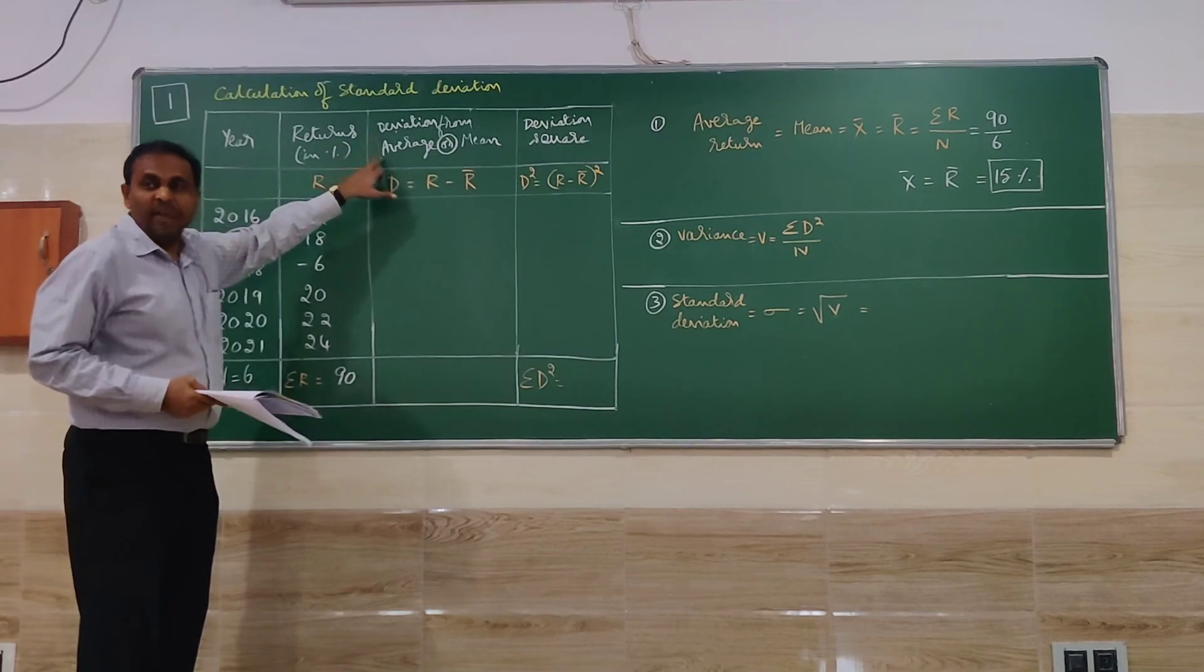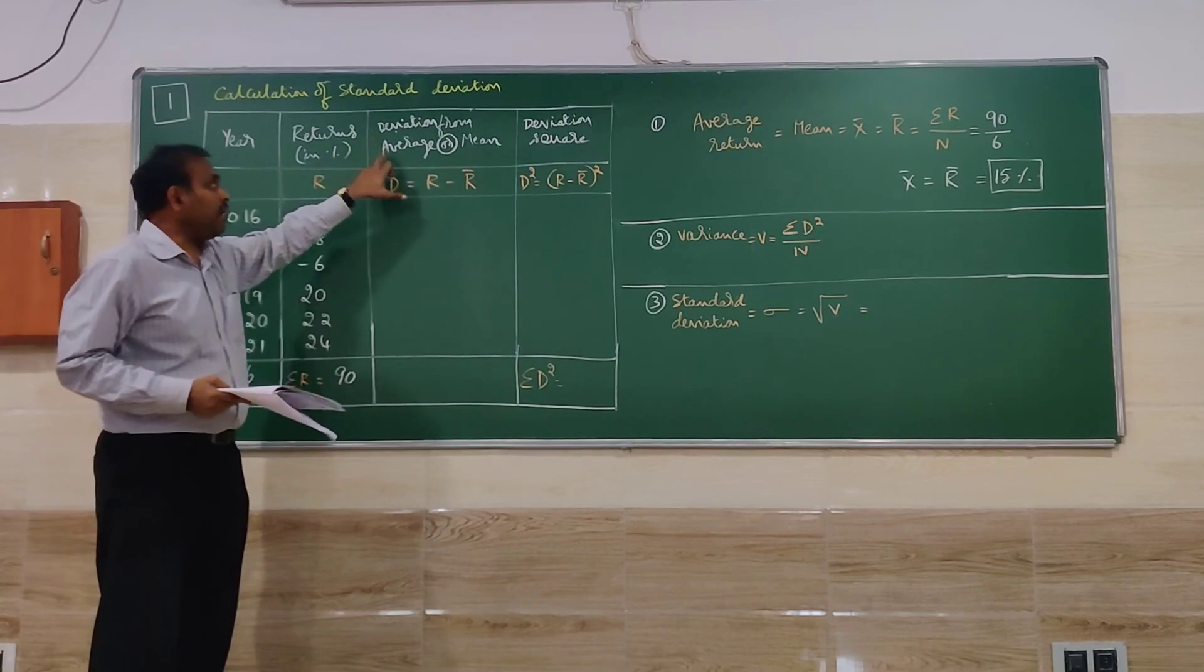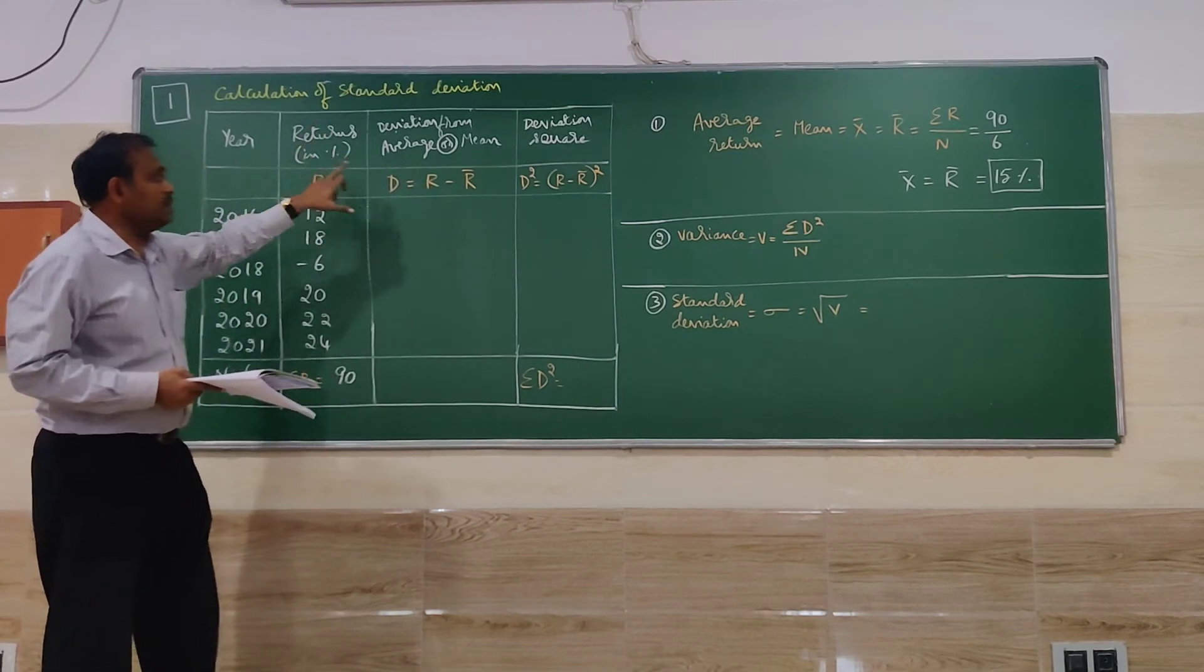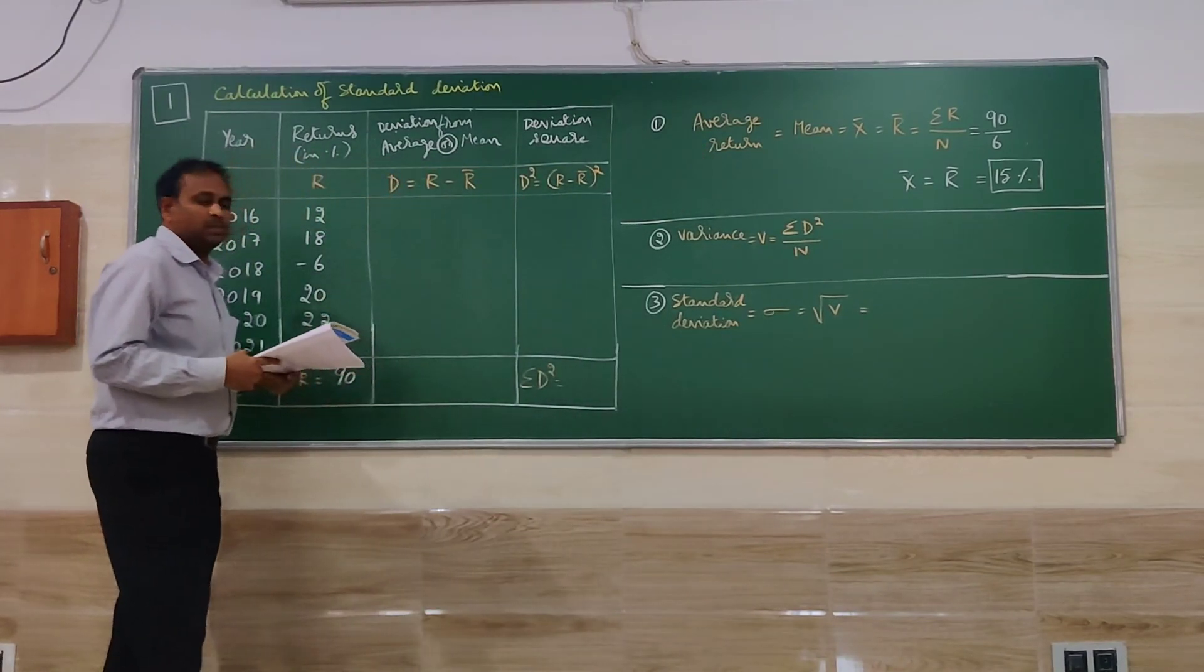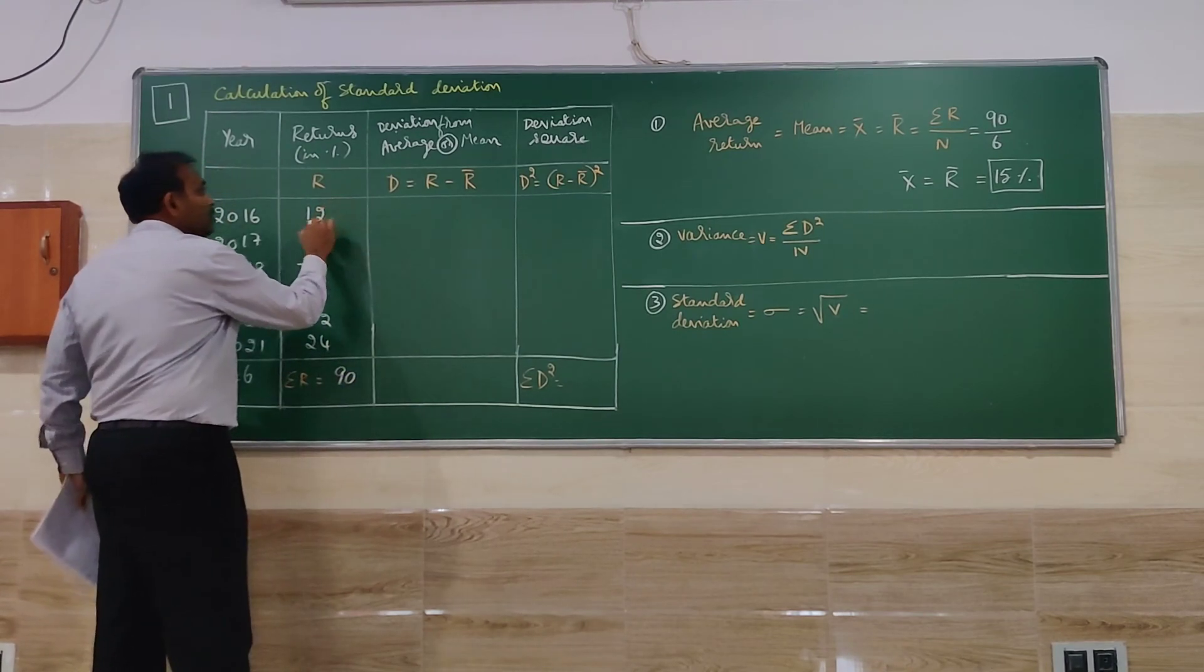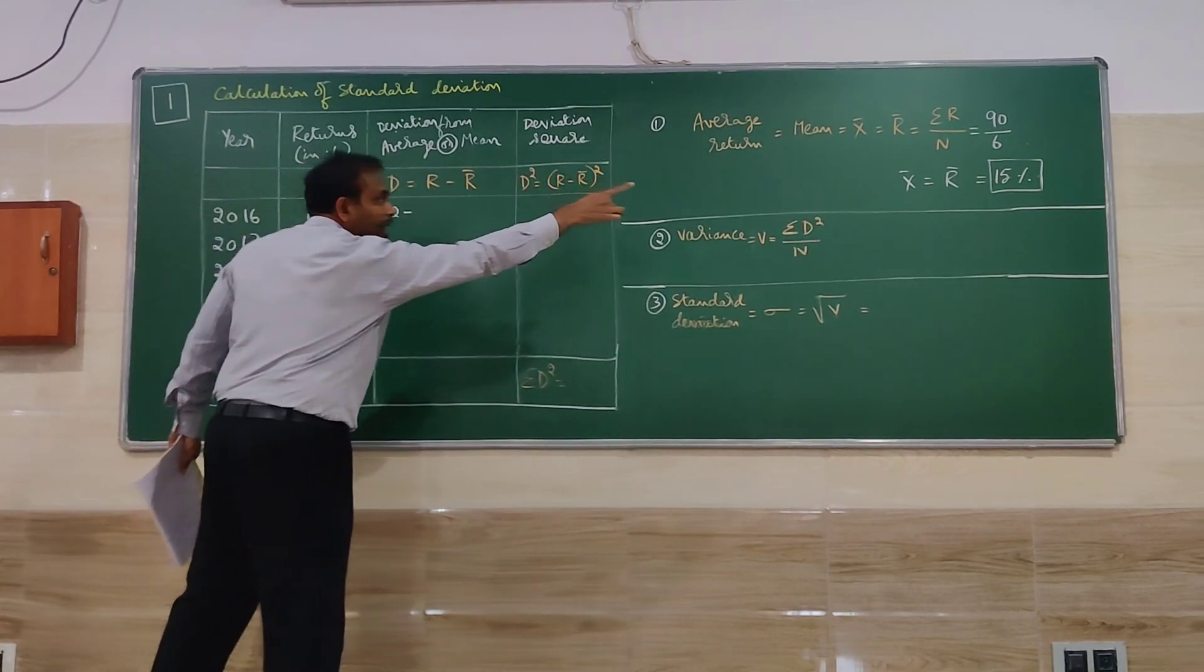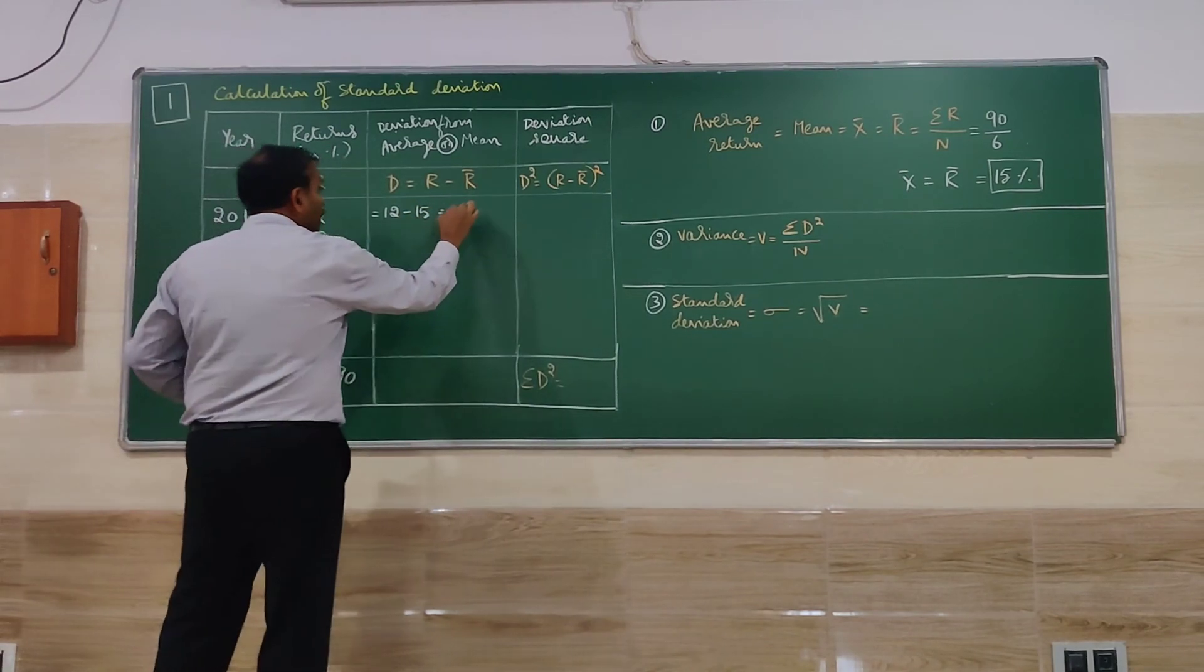Then we have to take the deviation of the return. How much deviation is there? Deviation from average or mean. It is denoted as D. Deviation is nothing but D. R represents actual returns. R bar represents average returns. We are finding the difference. Deviation and the difference is one and the same. So here R we will take for 2016: 12 minus R bar 15. That is equal to minus 3.